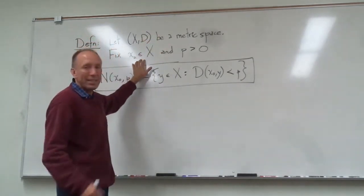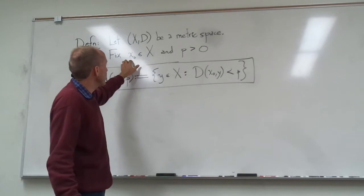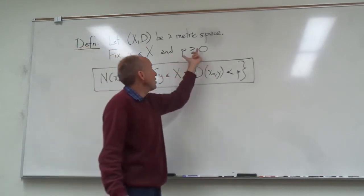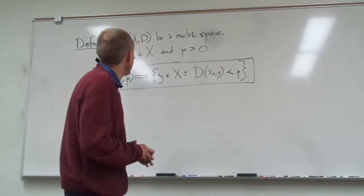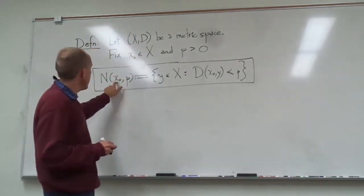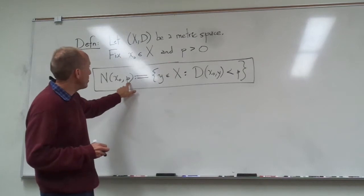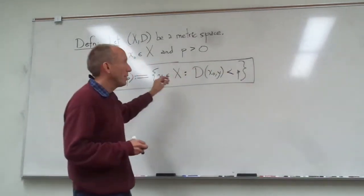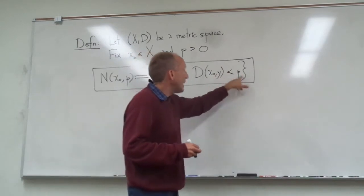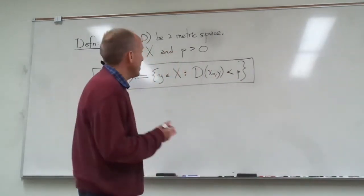If we fix a point in the metric space x naught and we choose a positive number for a radius, call that p. Then the neighborhood centered at x naught of radius p is just all of the other points that are in the metric space that are a distance less than p away from x naught.